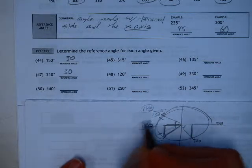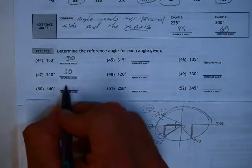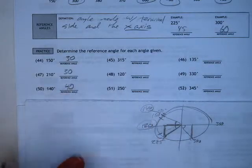And that basically means you need to find the difference between those two things there. So a reference angle for 140 degrees is 40 degrees.